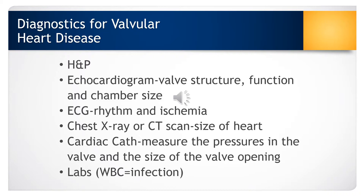To diagnose valvular heart disease, we start with a history and physical. An echocardiogram is done to evaluate the valve structure, function, and size of the heart chambers. An ECG evaluates the heart rhythm and looks for ischemia. A chest x-ray is done to determine the size of the heart. A cardiac catheterization or angiogram is done to measure the pressures inside the valves and the size of the valve opening. Labs may also be drawn to rule out infection.